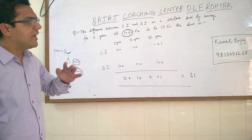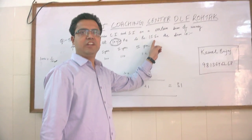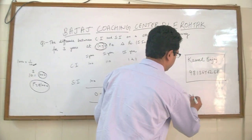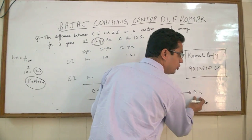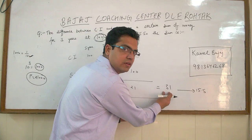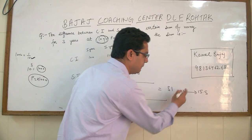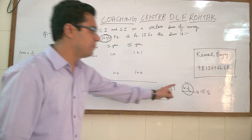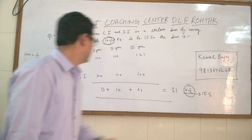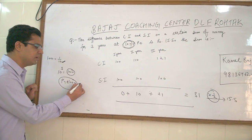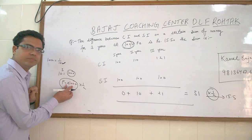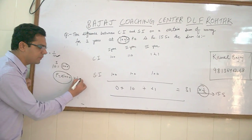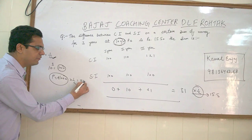But in actuality the difference is 15.5. It means the actual difference is half of what we calculated. So our multiplier is 1 by 2, so our principle will be 1 by 2 of 1000. We considered the principle as 1000, but in actuality our principle will be Rs. 500.